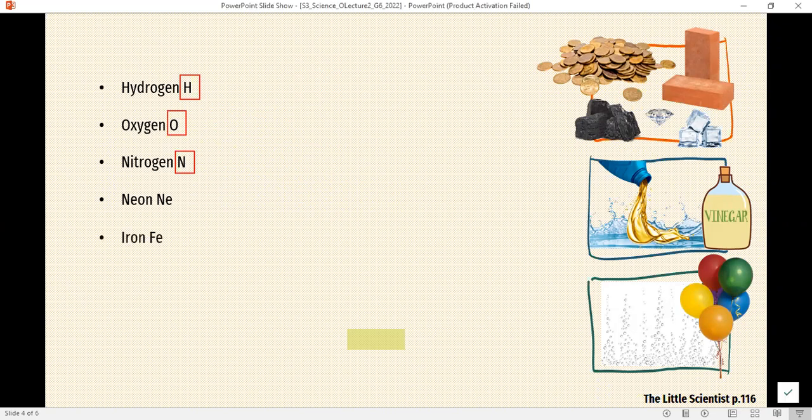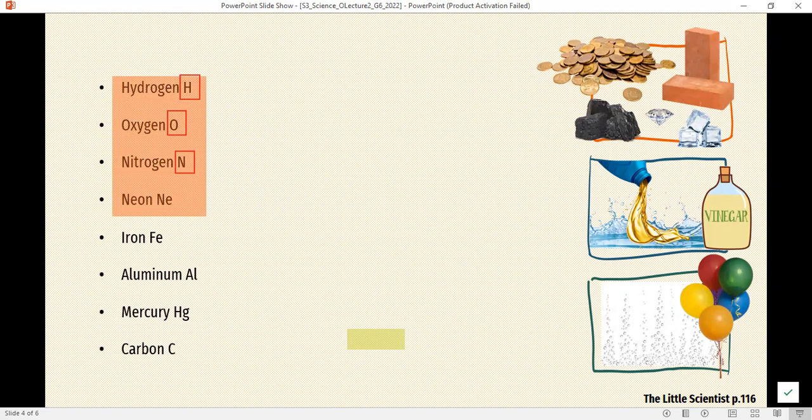Let's go for more examples: iron (Fe), aluminum (Al), mercury (Hg), carbon (C). The hydrogen, oxygen, nitrogen, and neon are found in the gas state. While the iron, aluminum, mercury, silver, and gold are metals.